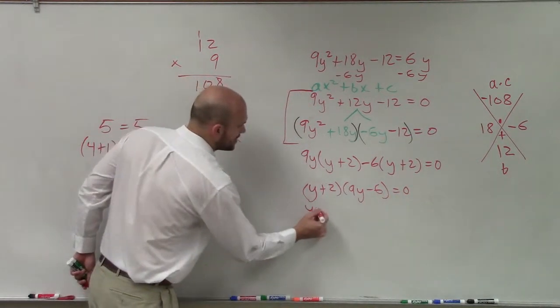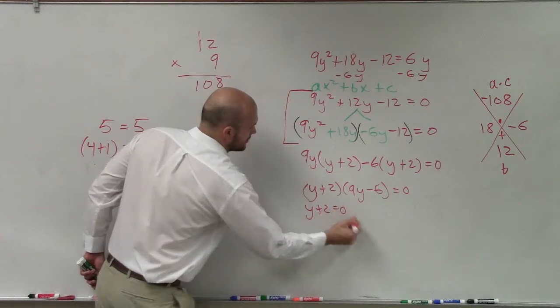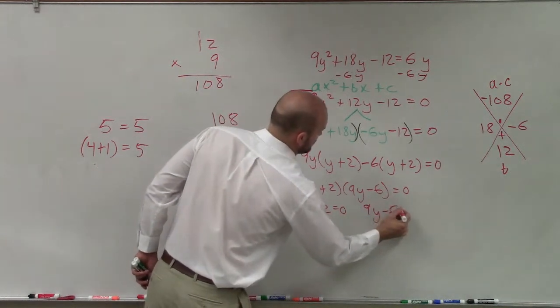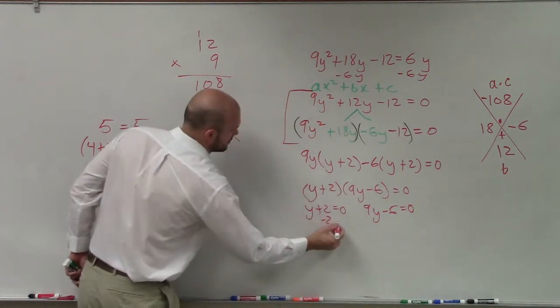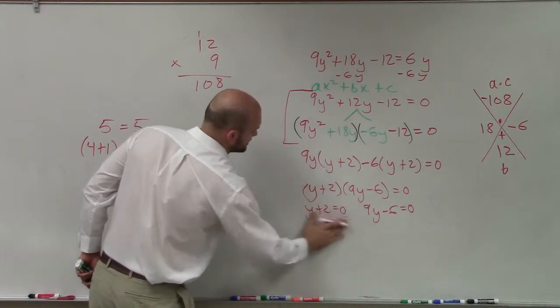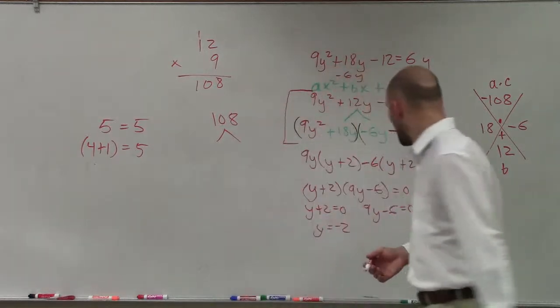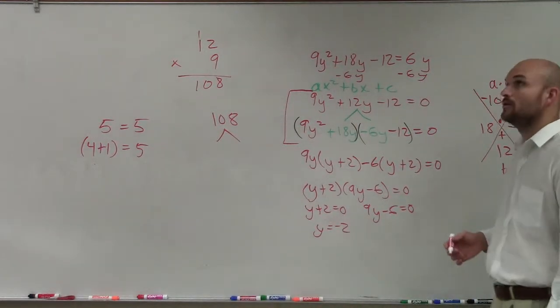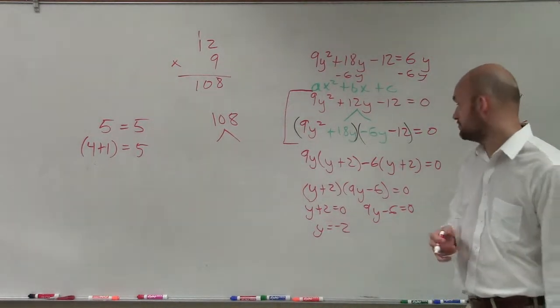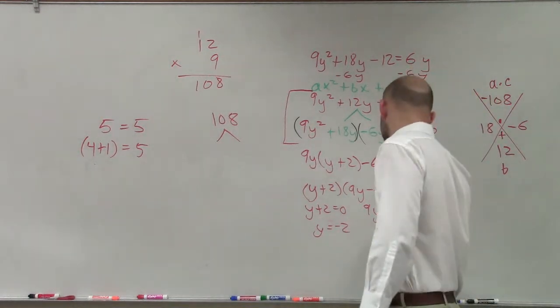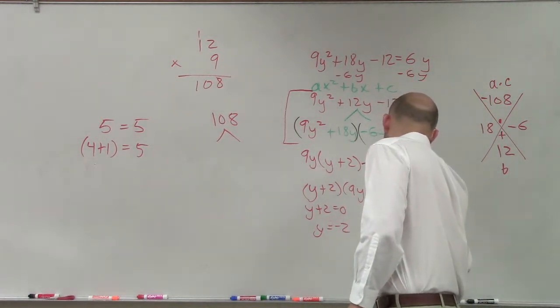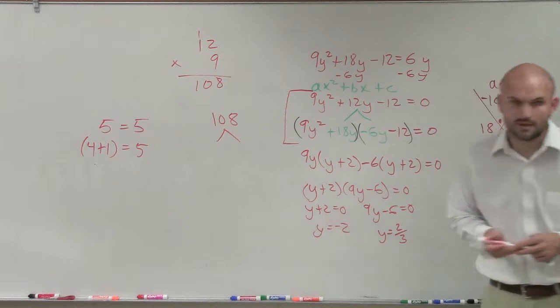I'm not going to go through the steps. y = -2. Add 6, divide by 9, and then divide by 3. So it's going to be 2/3.